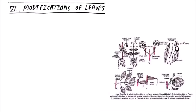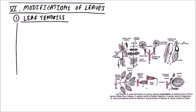Welcome to Studio Biology. In this video we are going to discuss the various modifications of leaves. First of all we'll take the leaf tendrils. A leaf may be entirely involved in formation of tendrils, or a part of a leaf may also form a tendril, so depending upon the leaf or its parts, the tendrils may be of the following types.